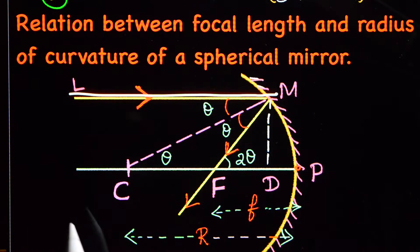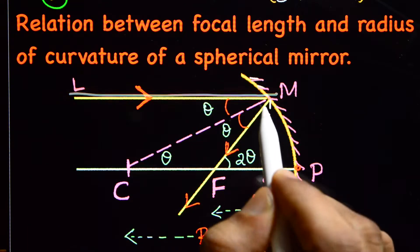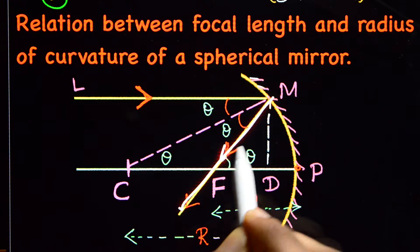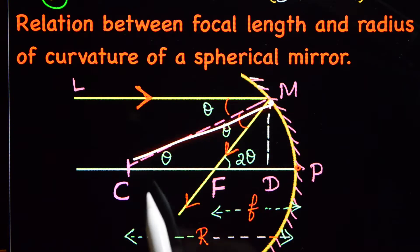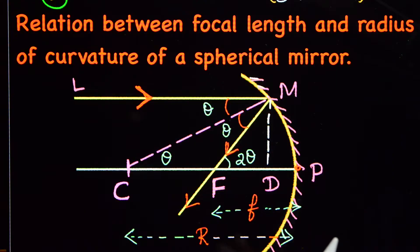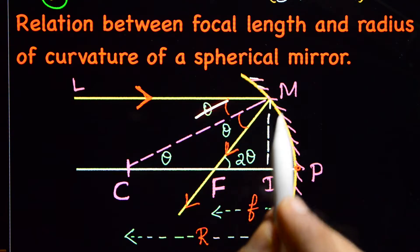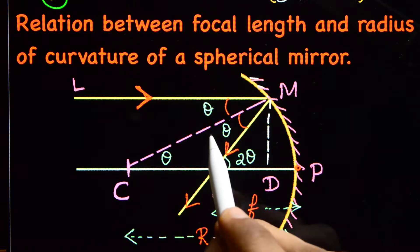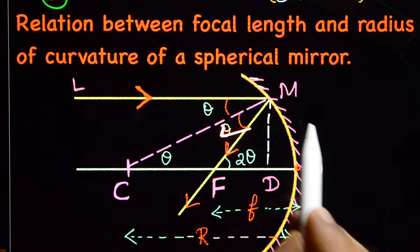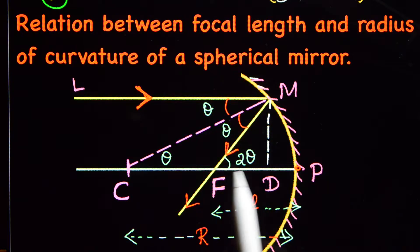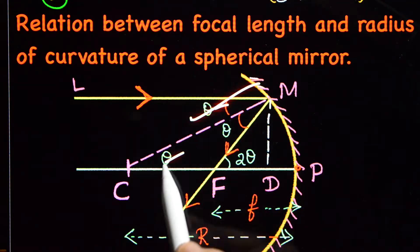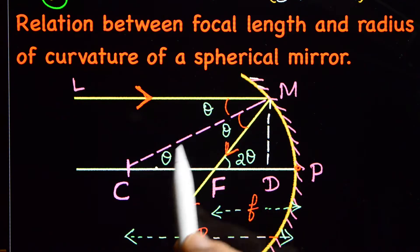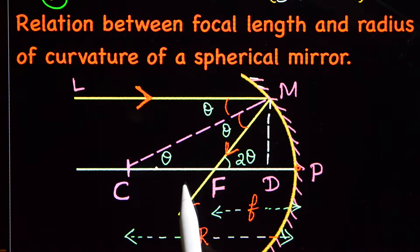Suppose LM is the incident ray and MF is the reflected ray. CM is the normal at the point of incidence. Here theta is the angle of incidence, and this is also theta — the angle of reflection. This theta and this theta are the same because they are alternate angles.